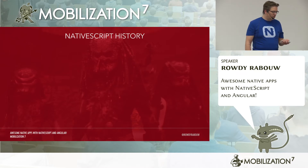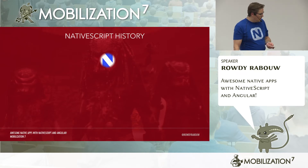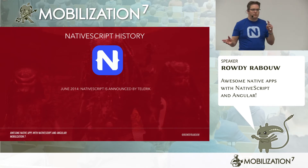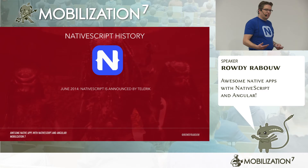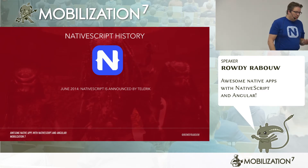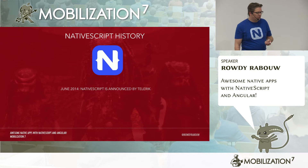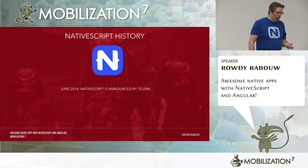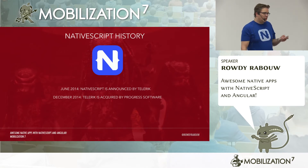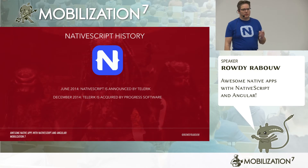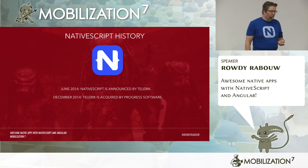A little bit of history. The first idea was around 2013 — thinking about an alternative to hybrid apps like PhoneGap and Ionic. In June 2014 they announced they were going to build something that could really compete with native. The company is Telerik, a Bulgarian company located in Sofia. At the end of 2014, they were acquired by Progress Software, a large US company with over 30 years of experience.